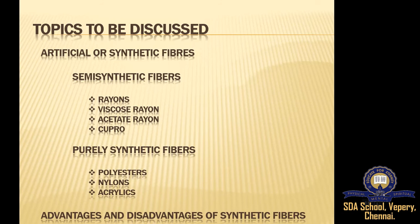Now we are going to learn about artificial or synthetic fiber. In artificial or synthetic fiber, we have two types: semi-synthetic fiber and purely synthetic fiber. In semi-synthetic fiber we will concentrate on Rayons — Viscose Rayon, Acetate Rayon, and Cuproammonium. In purely synthetic fiber we have Polyester, Nylon, and Acrylics. We will also learn about the advantages and disadvantages of synthetic fiber.